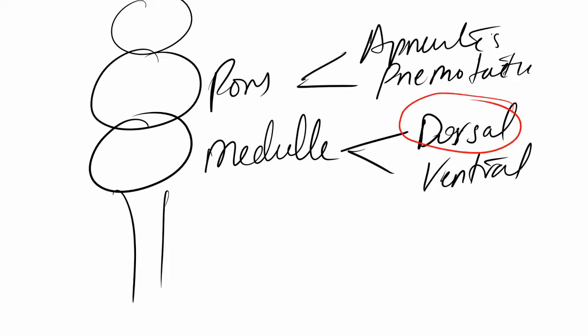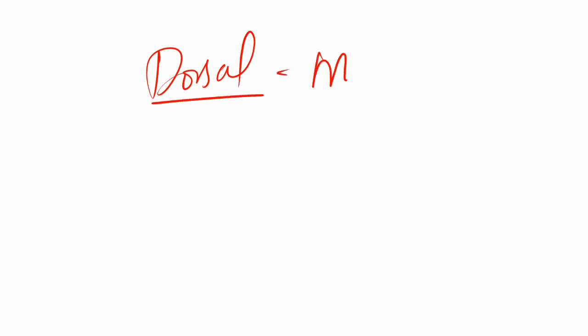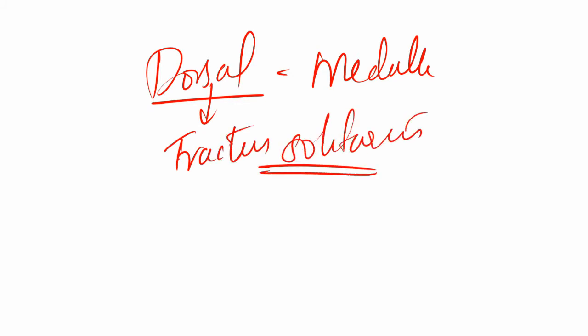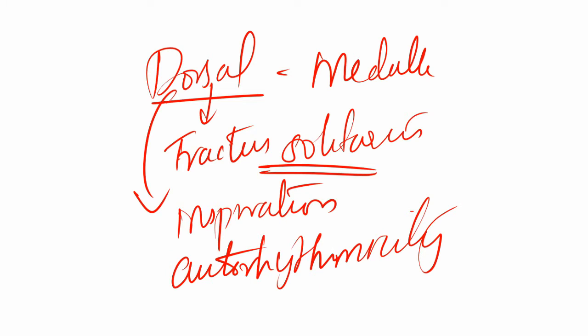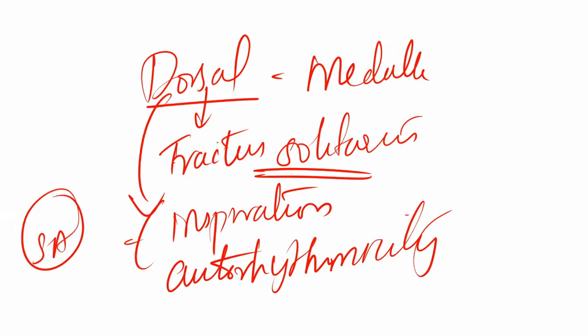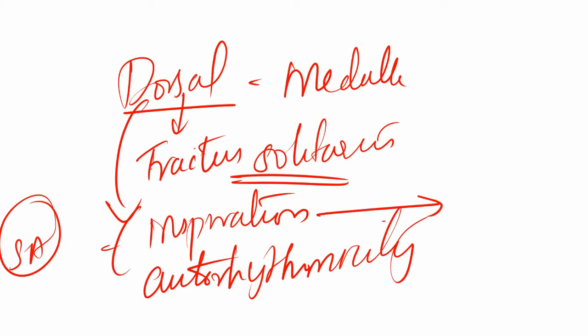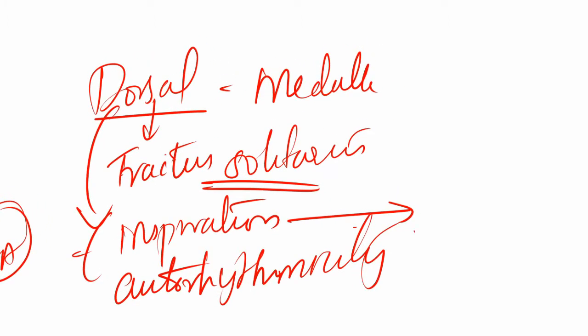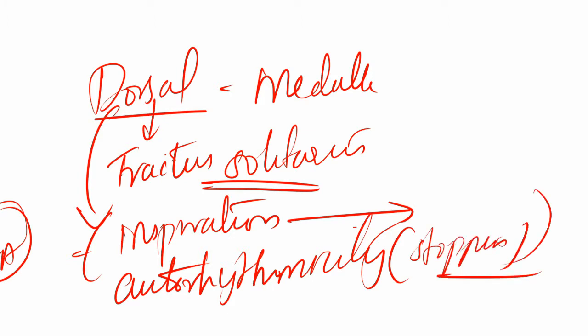The dorsal group belongs to the medullary group of neurons and lies in the tractus solitarius. It is responsible for inspiration and has autorhythmicity — comparable to the SA node of the heart. It is the main respiratory center. However, it only handles inspiration, not expiration. The only way to expire is to stop the stimulation of the dorsal group of neurons; there is no other mechanism.